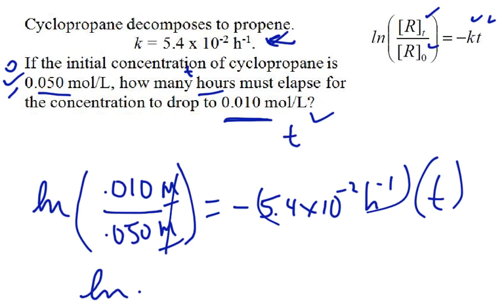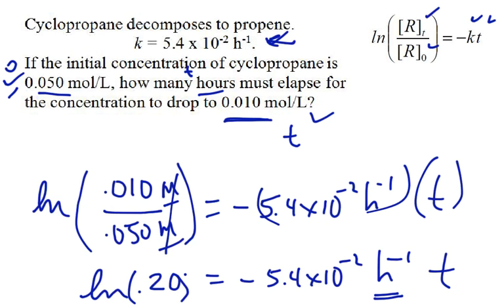We can see that the natural log of 0.01 over 0.05 is going to be the natural log of 1 fifth. And that equals this value here, negative 5.4 times 10 to the negative 2 hours to the minus 1 times T. And you can see that the time is going to end up being in hours, because this is hours to the minus 1. So to finish the problem, we have to calculate the natural log of 0.2 and divide by 0.54 times 10 to the minus 2. This is done in your book, and when you get all done, I believe the answer is 30 hours. So you should try that yourself.